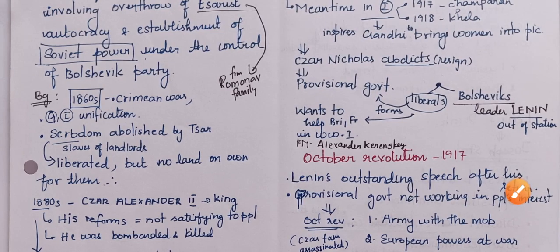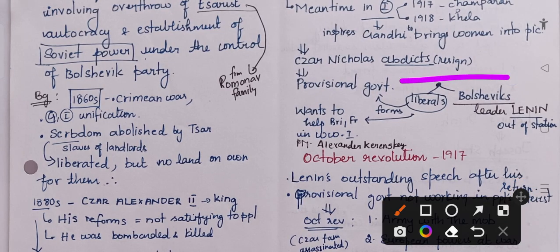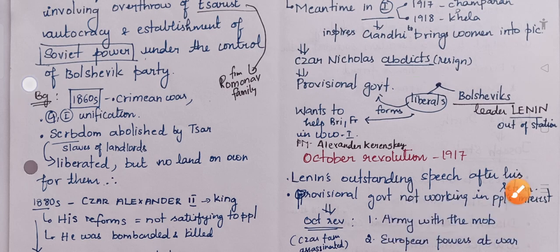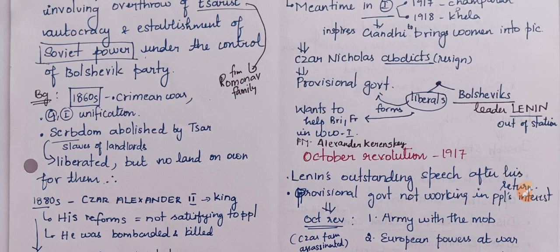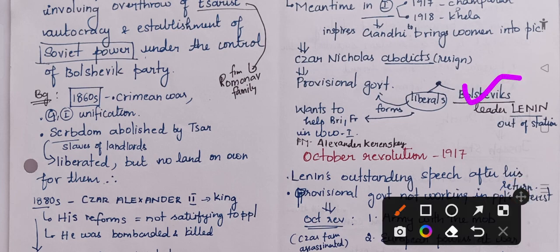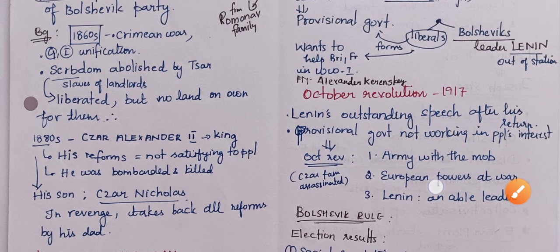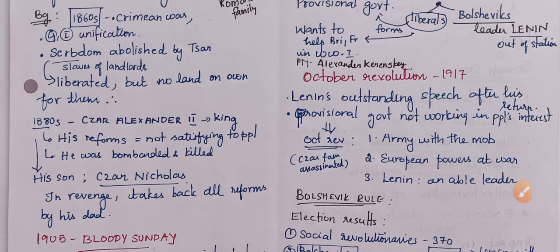Then Tsar Nicholas abdicated, that is he resigned, and a provisional government was formed. The liberals formed the government. The Bolsheviks' leader Lenin was out of station at that time. The liberals wanted to help Britain and France in World War I. The Prime Minister was Alexander Kerensky.